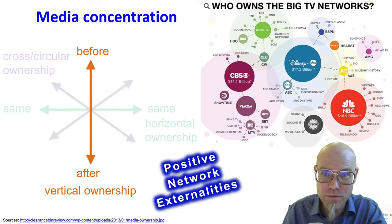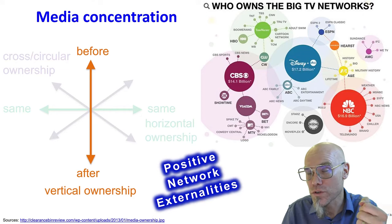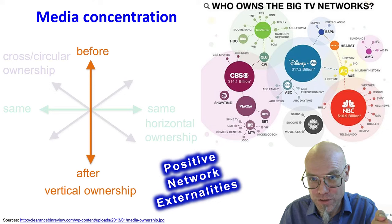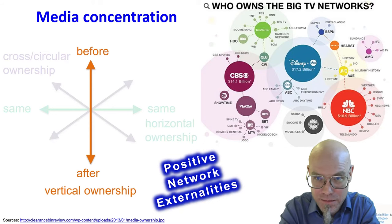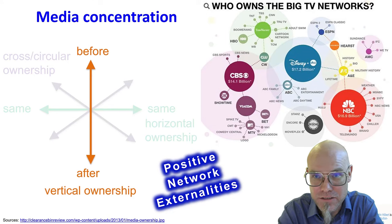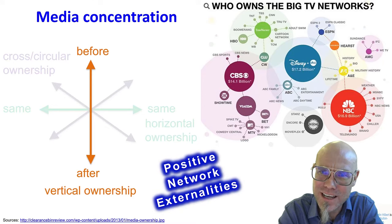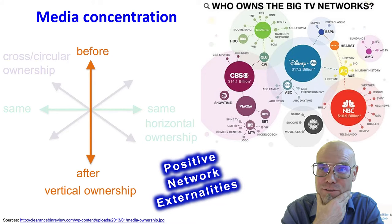Positive network externalities — the value of the network exponentially increases with every additional node that joins. The effect is that I now have a very big network. So if I'm an online retailer like Amazon, I have a very big network of people who buy and sell things on my platform. Suddenly it turns out that I have so many customers and know so much about them, that I might as well purchase one of my suppliers.